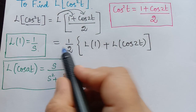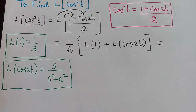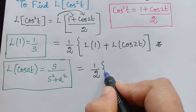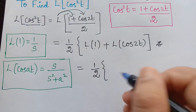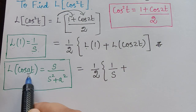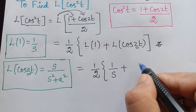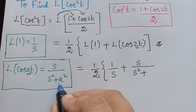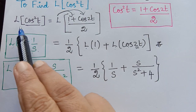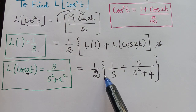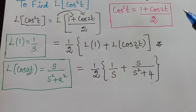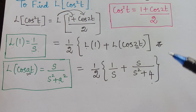Therefore, we obtain this to be equal to 1/2 times, in the bracket, L{1} = 1/s, plus L{cos2t}: applying the formula with a = 2, we get s / (s² + 4). So we have found that L{cos²t} = (1/2) · [1/s + s/(s² + 4)]. We can simplify here and then substitute in equation 1, or substitute in equation 1 and simplify later.